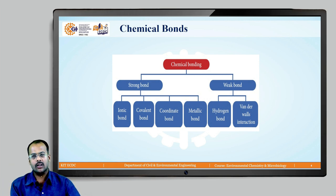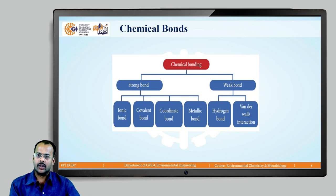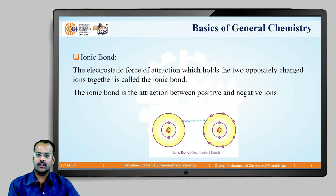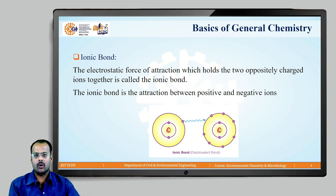There are two types of bond: strong bond and weak bond. Strong bond is again categorized as ionic bond, covalent bond, coordinate bond, and metallic bond. Then there is the weak bond. Weak bond consists of hydrogen bond and Van der Waals force of interaction, or Van der Waals force of attraction, which is always a weak one. We are going to see the first bond, which is nothing but the ionic bond.